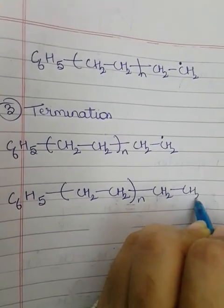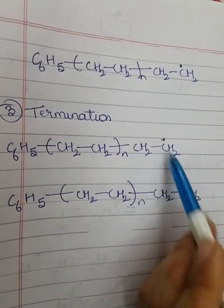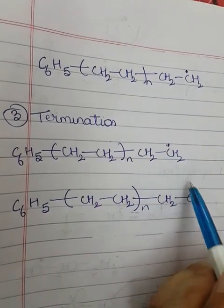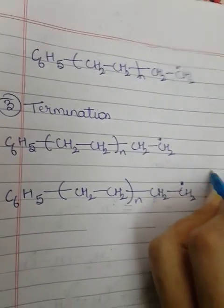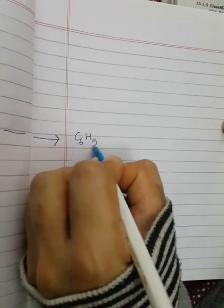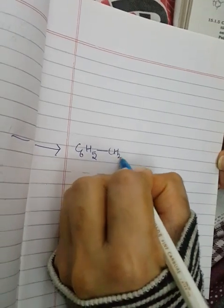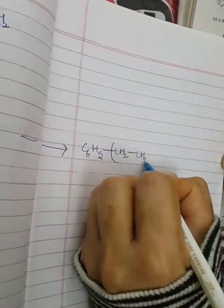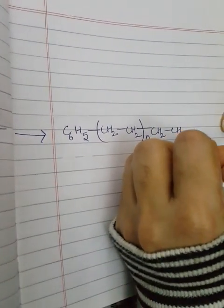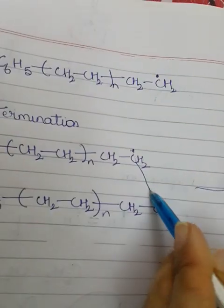Both have one odd electron. They are unstable so they will try to react with each other. This will form a bond with this carbon.